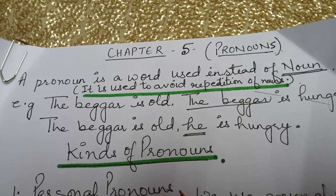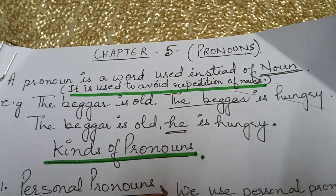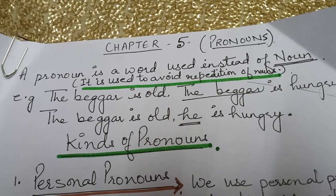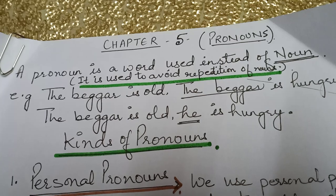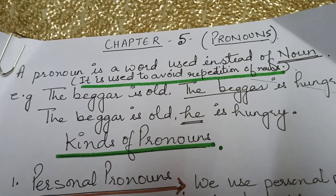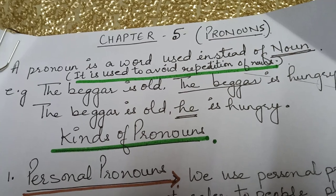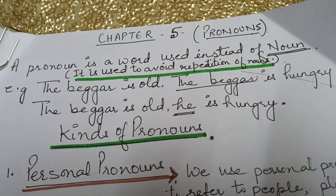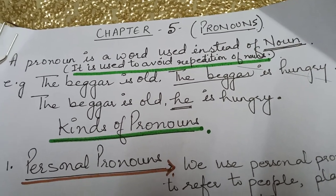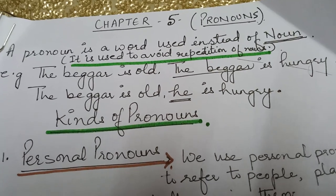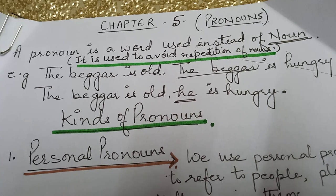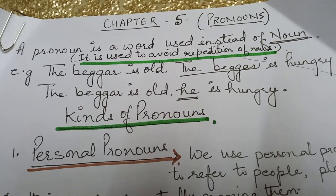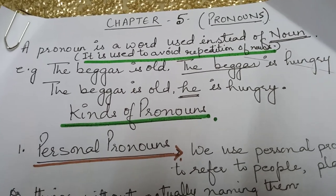In the fifth chapter of English language, we'll study about pronouns. A pronoun is a word that we use instead of a noun. It is used to avoid repetition of nouns. For example: 'The beggar is old, the beggar is hungry' — here 'the beggar' is coming twice. To avoid this, we use 'he': 'The beggar is old, he is hungry.' So here, 'he' is a pronoun.